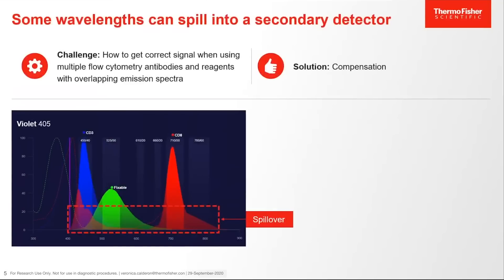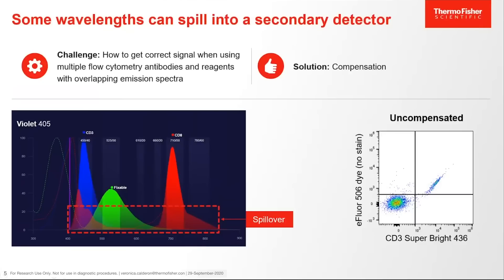The challenge is how to get correct signal when using multiple flow cytometry antibodies and reagents with overlapping emission spectra. The solution is compensation. The graph displays the spectral viewer for the violet 405-nanometer laser, showing a fluorescent marker collected in the 450-40, 525-50, and 710-50 bandpass, with spillover across different wavelengths. The flow plot shows uncompensated data collected with the violet laser. Cells stained with CD3 SuperBright 436 show spillover into the EF506 detector that does not have stain. Compensation is needed.